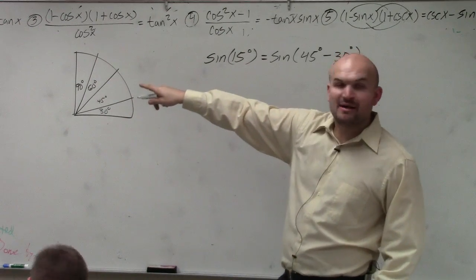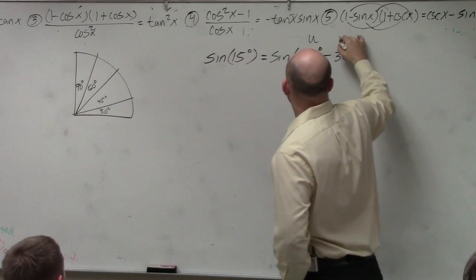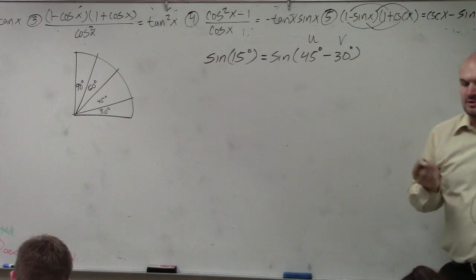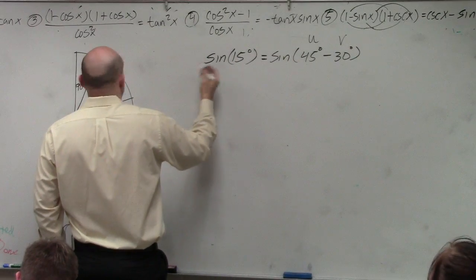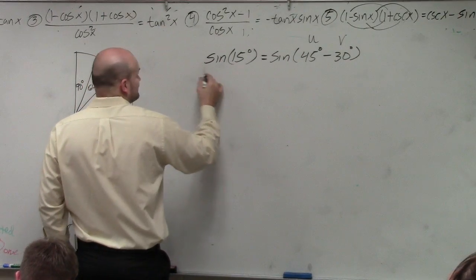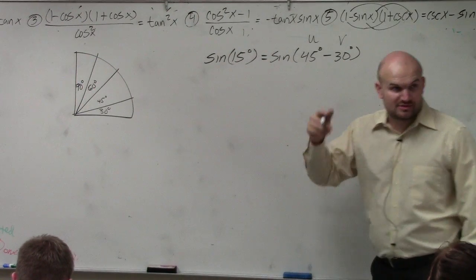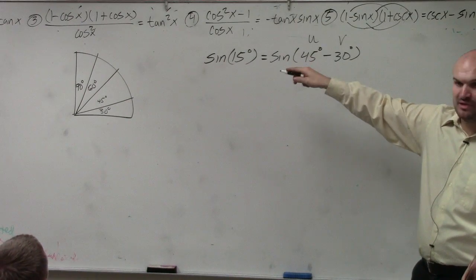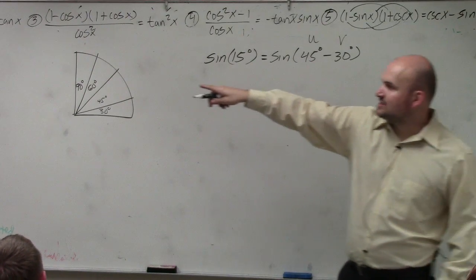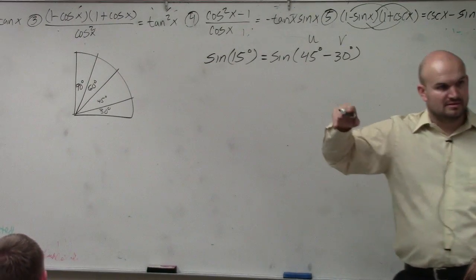So if you guys look at that, you can see the variables I use are u and v. Here is u. Here is v. So the sine formula for sine of u plus v, when you do plus, then you do the top sign, so it's plus and plus. If you guys look at cosine, you do plus and then minus, or minus and then plus. Does that make sense?